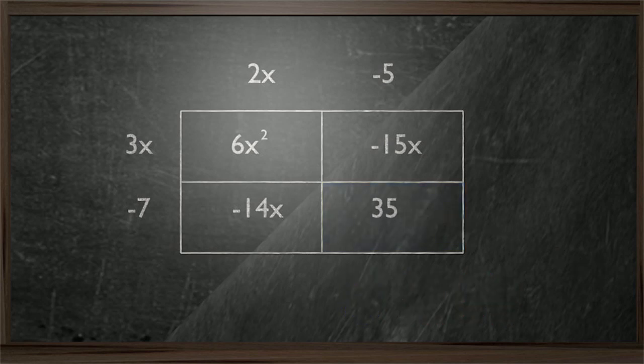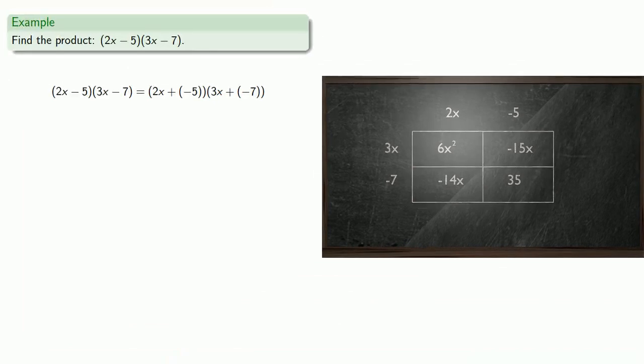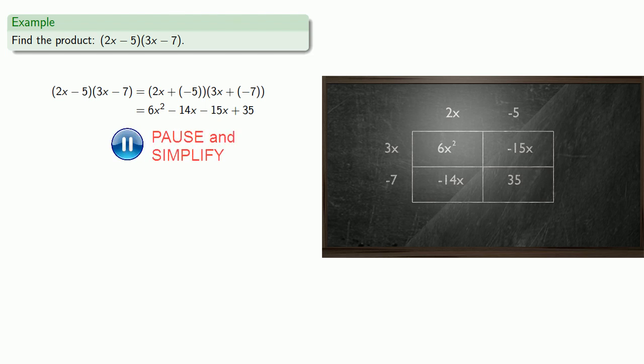And the sum of all these pieces gives us the product 2x minus 5 times 3x minus 7. So that will give us 6x squared minus 14x minus 15x plus 35. And we can collect our like terms and simplify to get our final answer: 6x squared minus 29x plus 35.